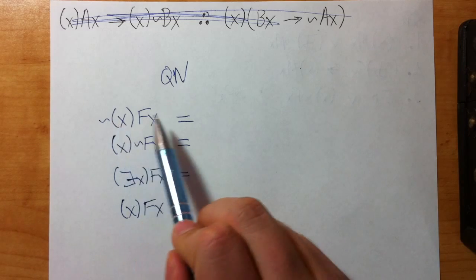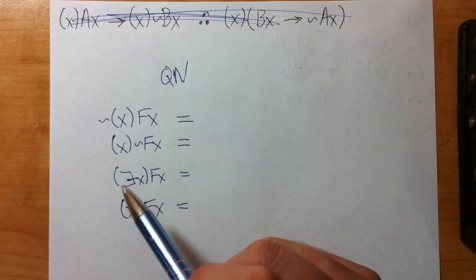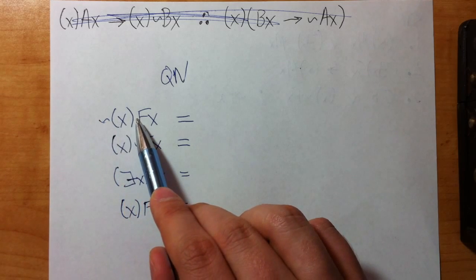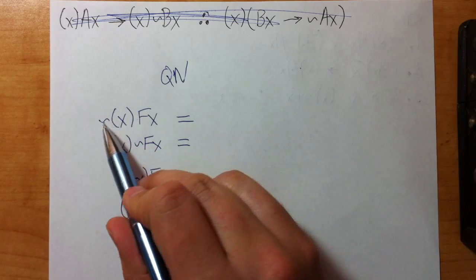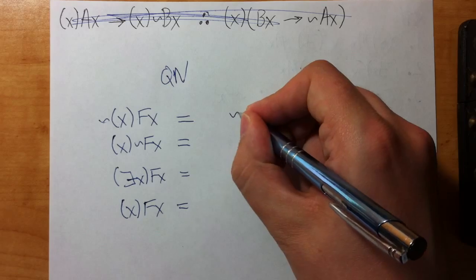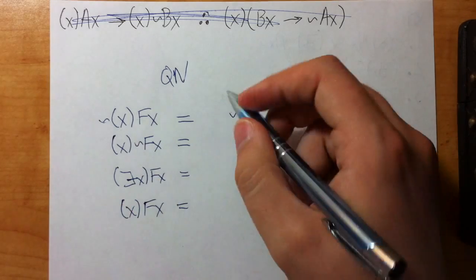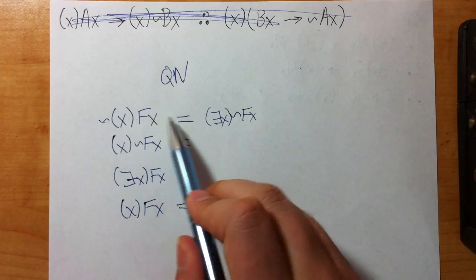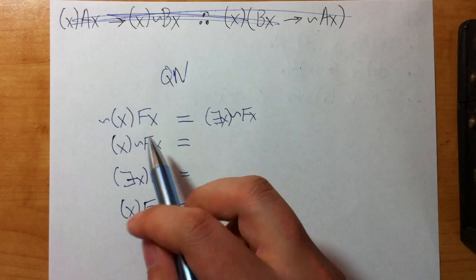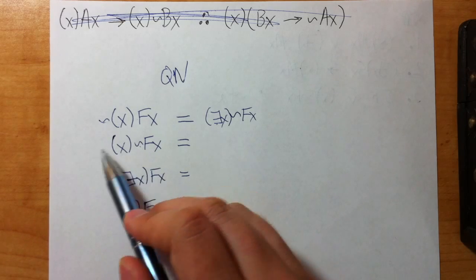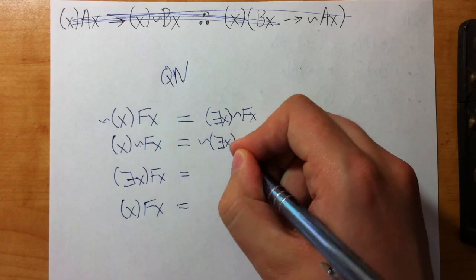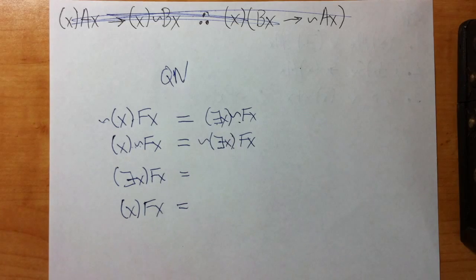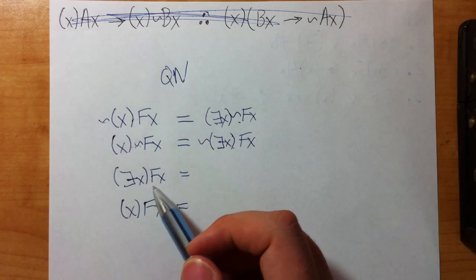So QN is really straightforward. It's an equivalency rule that allows you to transform quantifiers. So if you have this pattern, for example, you can change it into a different quantified statement. The way I think about it is I move the tilde through the quantifier, and that changes the quantifier. So if I move the tilde through the quantifier, it goes tilde Fx, and then it changes the quantifier into existential. So we move the tilde through the quantifier, and it switches the quantifier. Same thing with this combo. I have the tilde, I move it from the inside to the outside, and it changes the quantifier.